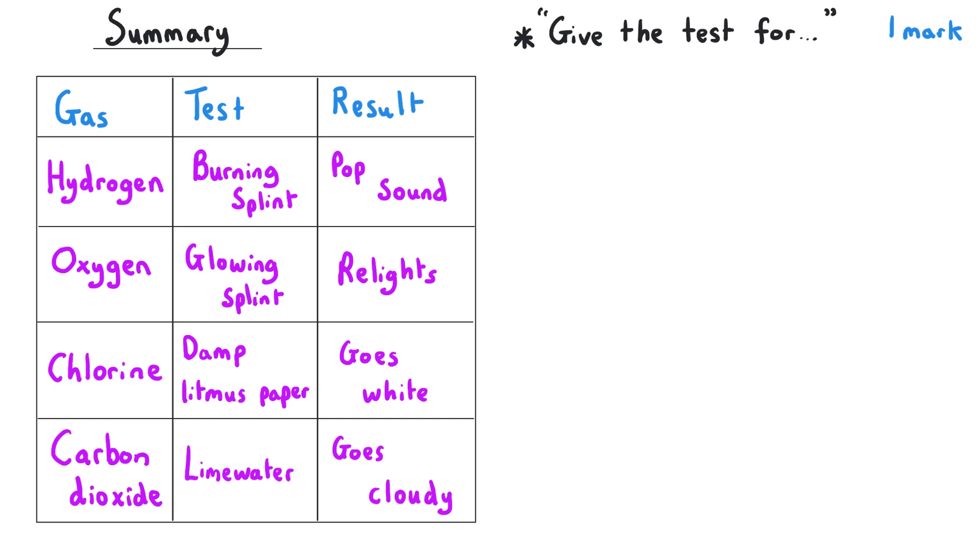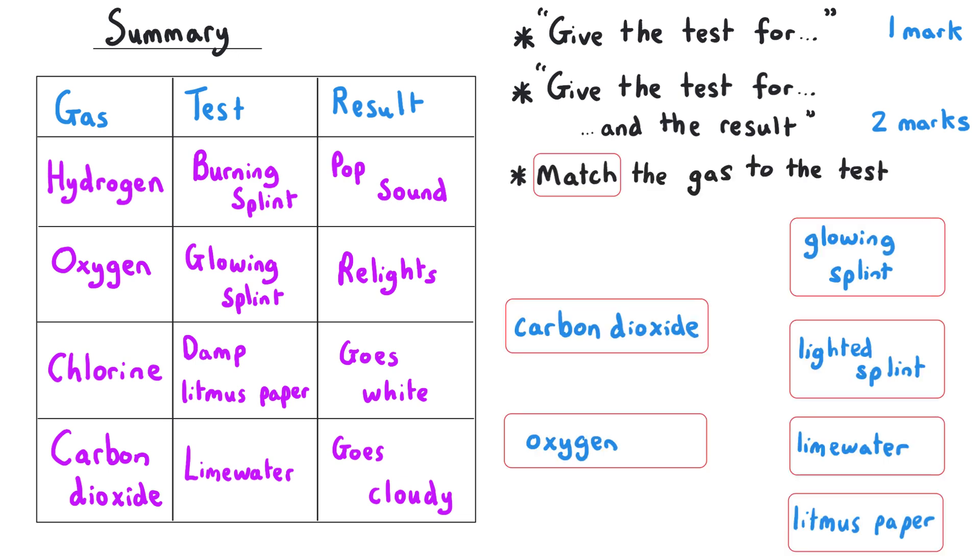They could simply give you a two mark question and say how could you prove that you've got carbon dioxide gas being produced, or it could be that you're given the gases and the tests and you're required to match them up. Perhaps just carbon dioxide and oxygen, but you've got all the four different tests that you have to choose from.